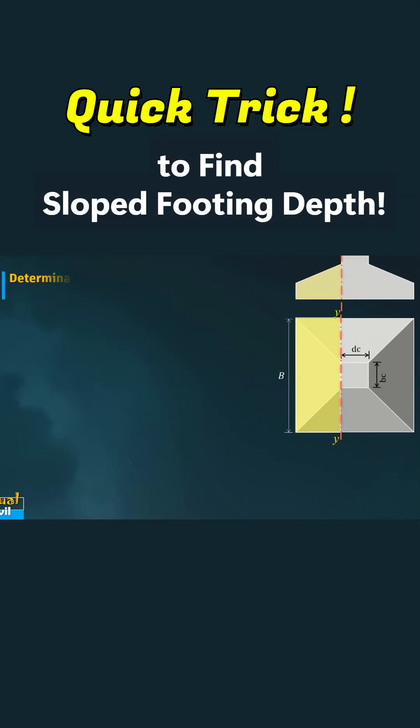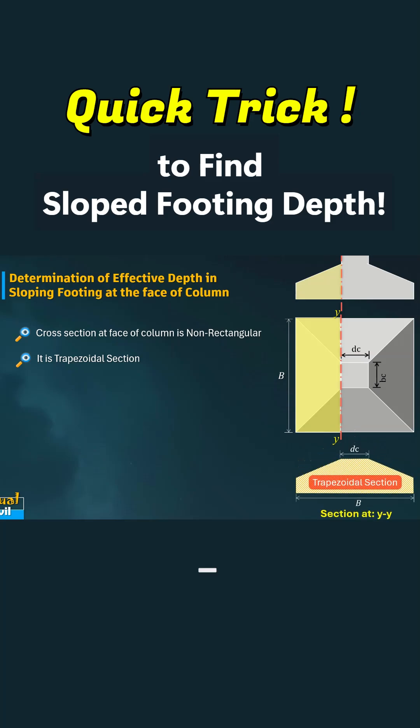When designing sloping footings, especially at the face of the column, it is important to understand that the cross-section at critical locations isn't rectangular. Instead, the top surface slopes linearly towards the edges, forming a trapezoidal profile.